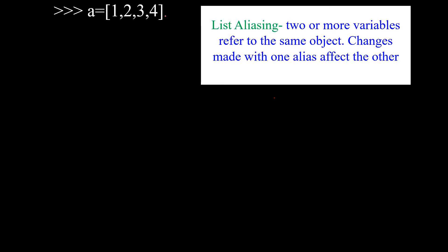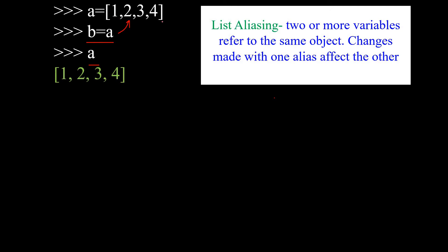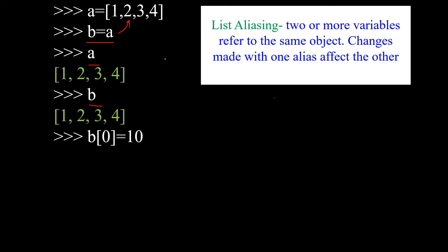For example, a is equal to [1, 2, 3, 4] — that is a list with four items. Then b equals a. So both A and B point to the same object. If you view the content of A, you get the original values 1, 2, 3, 4, and B gives you the same values because both A and B refer to the same object.